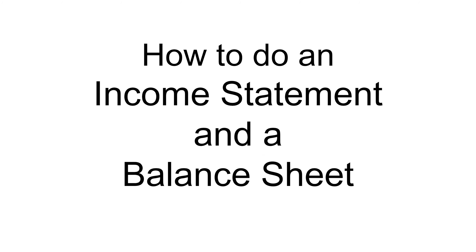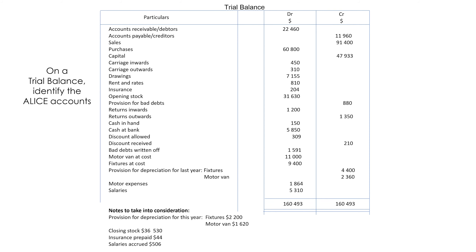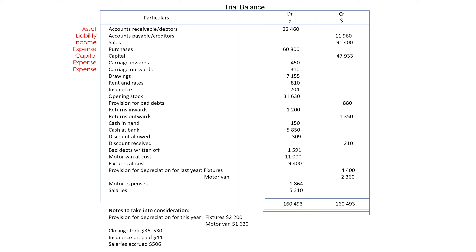How to do an income statement and a balance sheet from a trial balance. Identify the account types: accounts receivable or debtors — asset; accounts payable or creditors — liability; sales — income; purchases — expense; capital — capital; carriage inwards — expense; carriage outwards — expense; returns inwards — expense; returns outwards — income.